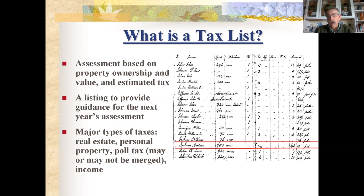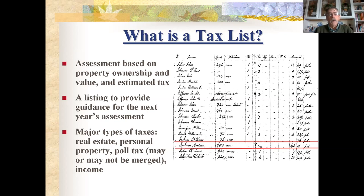Usually the tax assessor would have been the sheriff in early Missouri — there wasn't a separate assessor. The sheriff would deputize people to help, and they needed somewhere to start, so they'd save last year's list. The major types of taxes — sometimes in separate lists, sometimes combined — are real estate (land, lots, houses), personal property, and a poll tax, which is a per-head tax. In early Missouri these were often merged into one list with different columns.